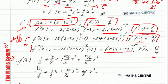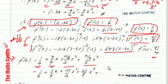Using the formula: f of 0 is 1/4, plus f prime 0 times x which is 3/4 times x, plus f double prime 0 over 2 factorial which is 27/8 divided by 2, times x squared, plus f triple prime 0 over 3 factorial which is 81/4 divided by 6, times x cubed. Cleaning this up, the final answer is 1/4 plus 3/4 x plus 27/16 x squared plus 27/8 x cubed.